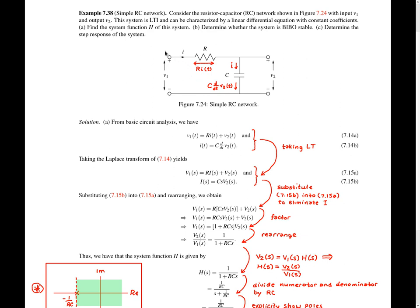First, consider the voltage drop between this point and this point in the circuit. By definition, this voltage equals little v1. This voltage is also equal to the sum of the voltage drop across the resistor and the voltage drop across the capacitor. By equating these two quantities, we obtain equation 7.14a. Next, consider the current passing through the capacitor. This current equals little i, and is also equal to C times the derivative of little v2. By equating these two quantities, we obtain equation 7.14b.